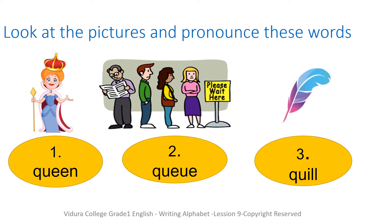Now, Sharan, you are going to look at some pictures and pronounce these words. Picture number one - the first picture is a Queen. Shall we say it again? Queen. Picture number two - the people are standing in a line, so we can say it's a Queue. Picture number three - it's a feather. Another name for feather is Quill. Shall we say it again? Quill. Queen, Queue, Quill - all have the sound 'qu' at the beginning.